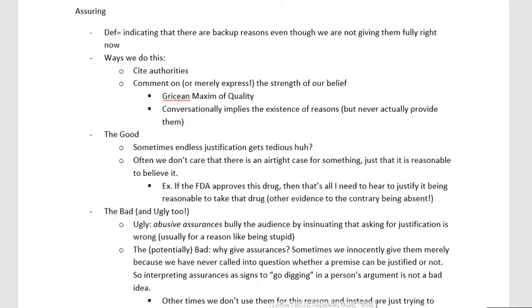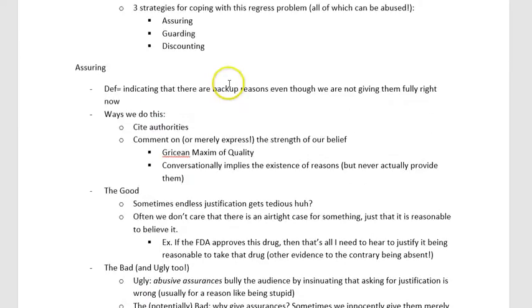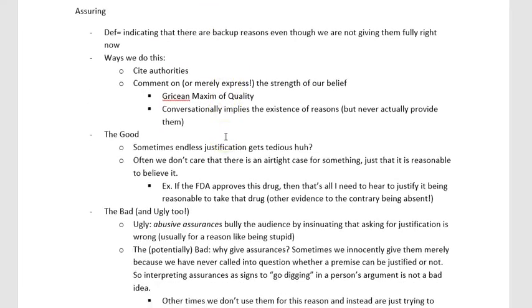Hello, everybody. Welcome back for another video lecture for Critical Reasoning Online. This is the part three video for the module Building Blocks of Arguments. We have some more things to annotate that we want to be watching for. The big ones we're going to talk about here are assuring, guarding, and discounting — three other activities that we use as part of the broader activity of arguing.